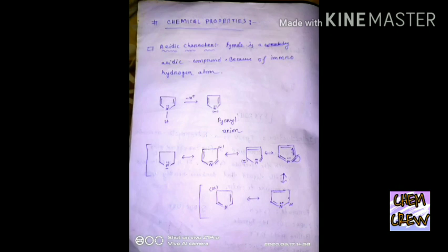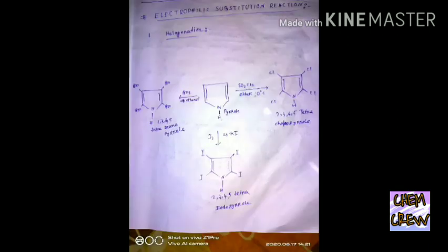So the only one lone pair, when it starts resonance, the nitrogen gets partially positive charge and in the ring there occurs a charge separation. That's why the pyrrole anion is more stable than pyrrole. So pyrrole shows acidic character.